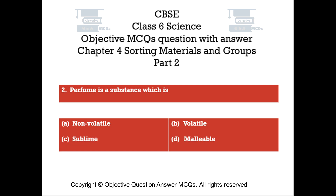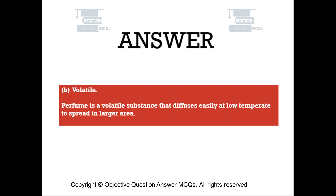Question number 2. Perfume is a substance which is — Option A: Non-Volatile. Option B: Volatile. Option C: Sublime. Option D: Malleable. The right answer is Option B — Volatile. Perfume is a volatile substance that diffuses easily at low temperature to spread in a larger area.